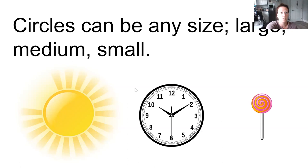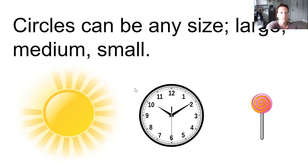We can find objects all around us that are shaped like circles. I put a few examples: buttons and coins, pennies and quarters, a doughnut - the top of that doughnut is round, a ring. The shape of a whole pizza is a circle, but what about one slice of pizza? Who knows what shape that one slice of pizza is?